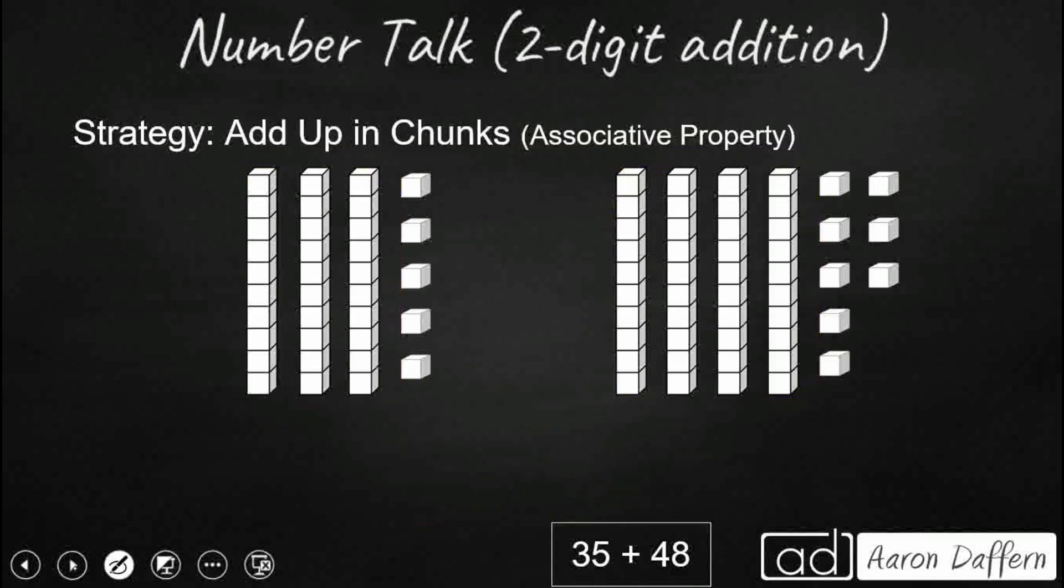We can always add up in chunks. This uses the associative property. You take the entire first addend and the tens place of the second addend. So it's kind of like place value, except we're going to keep the first addend together. So my 35 plus 48 gets reimagined here. And I'm going to take my 48 and look at it in place value. 40 plus 8.